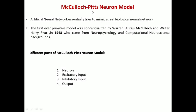McCullough-Pitts Neuron Model. Artificial neural networks essentially try to mimic the real behavior of biological neural networks. The first ever primitive model was conceptualized by Warren Sturgis McCullough and Walter Harry Pitts in the year 1943. These scientists came from neuropsychology and computational neuroscience backgrounds, and basing upon their names, this neuronal model has been named the McCullough-Pitts Neuron Model.